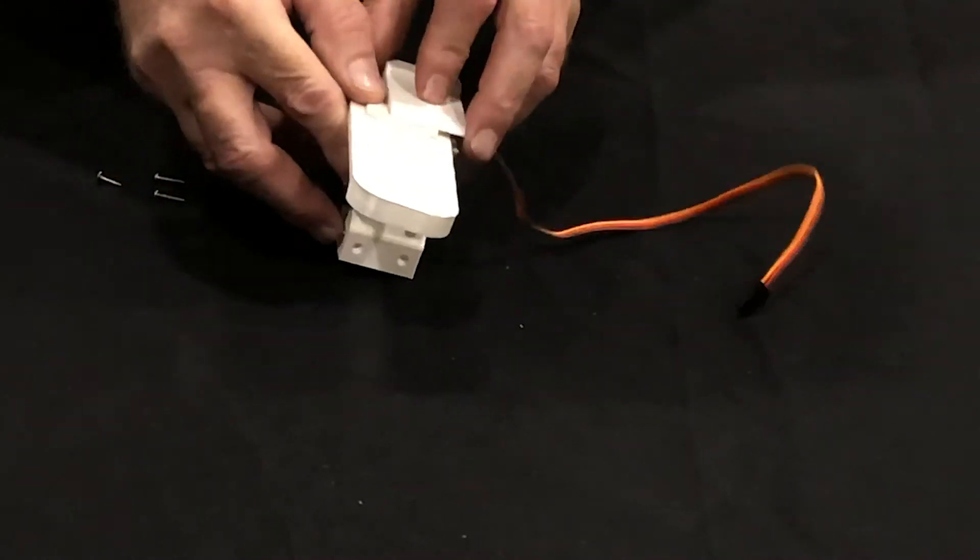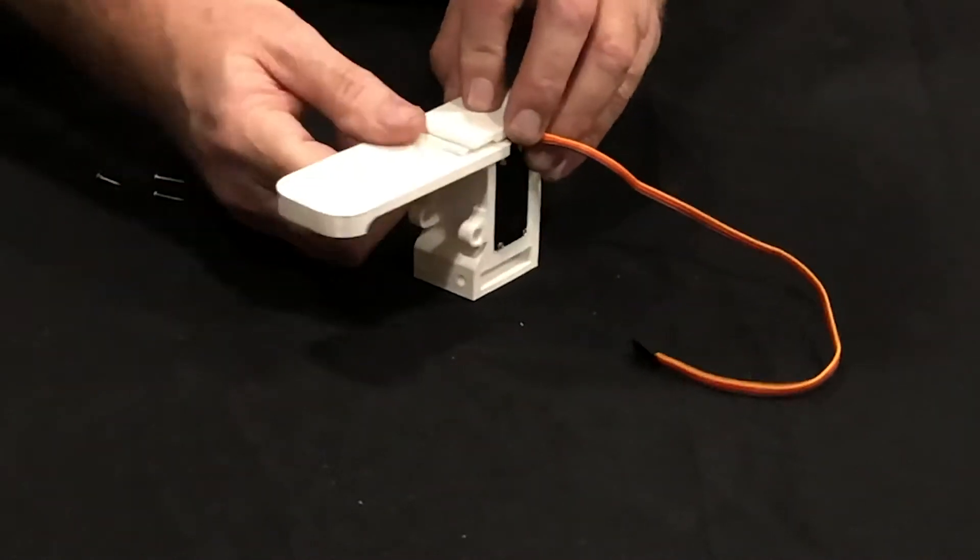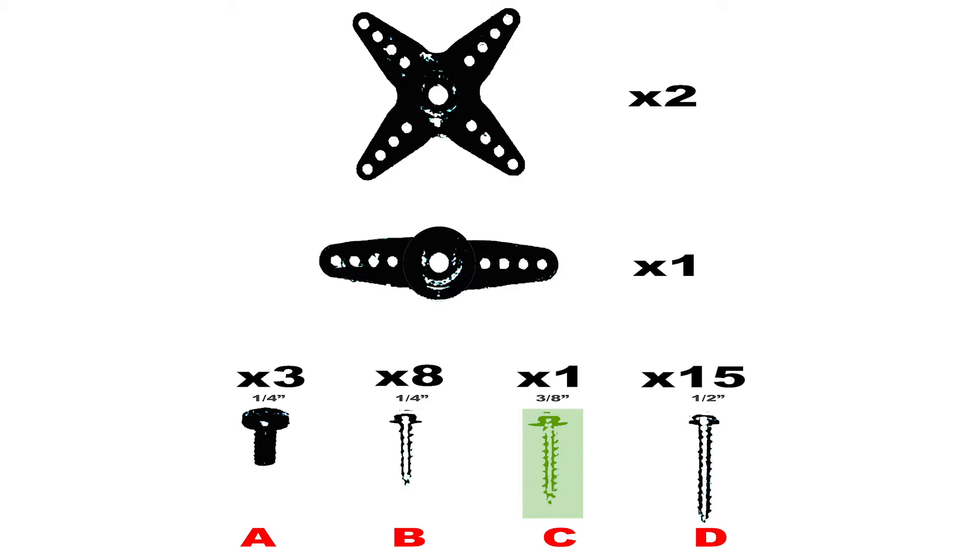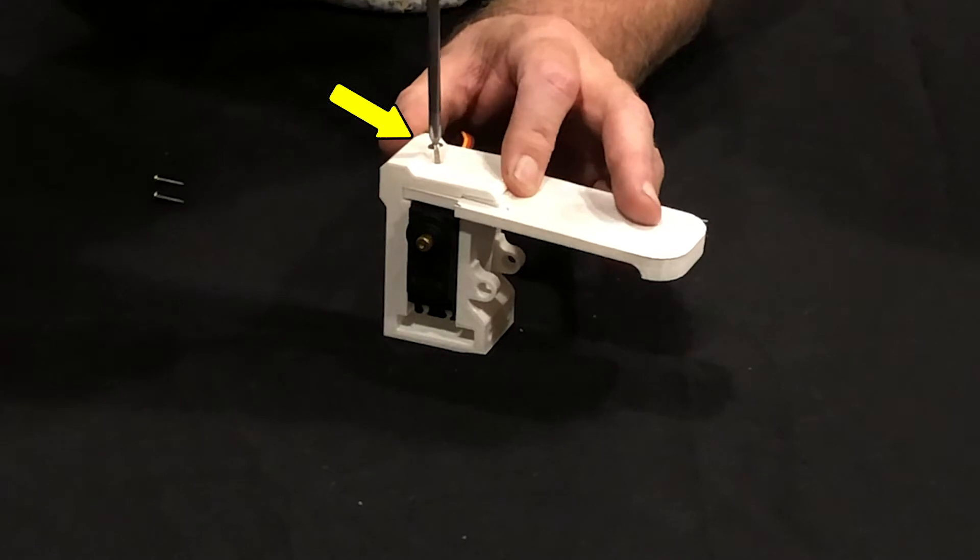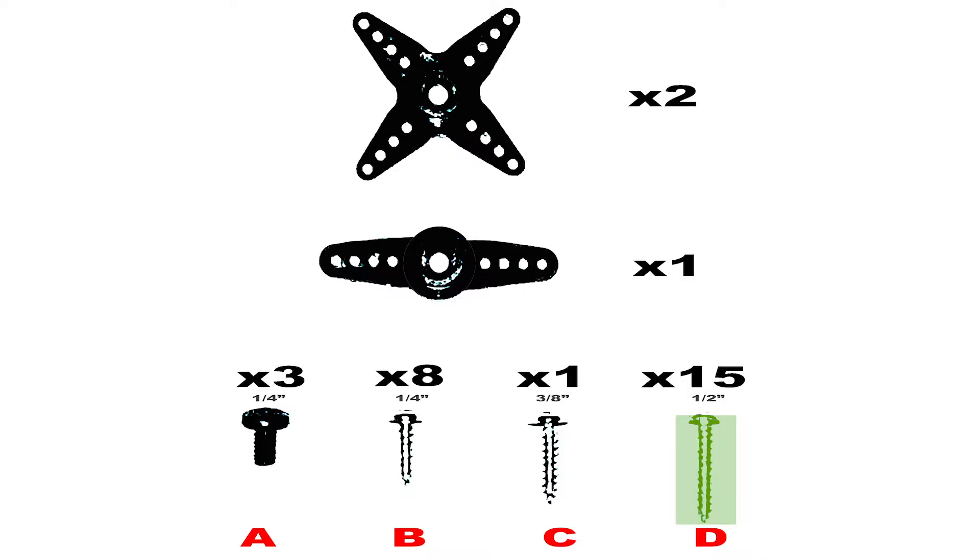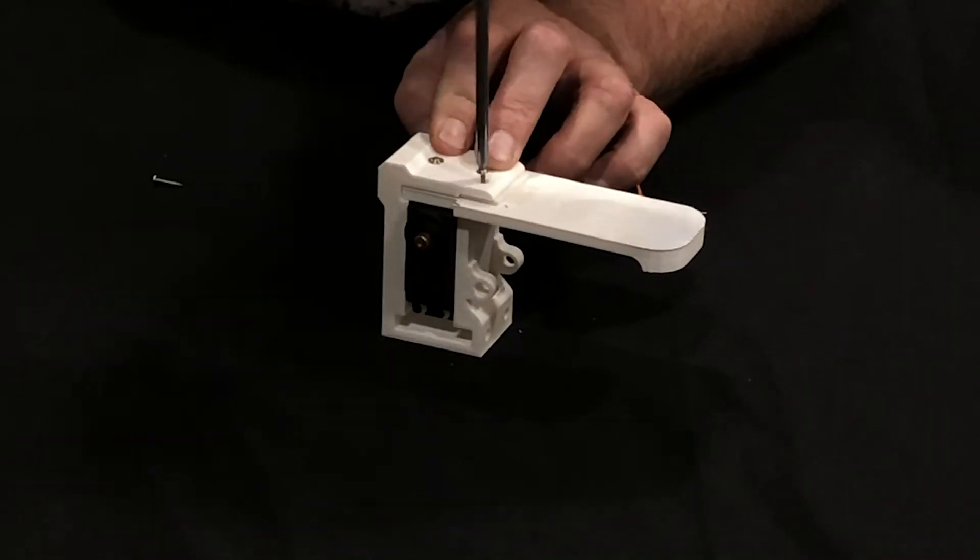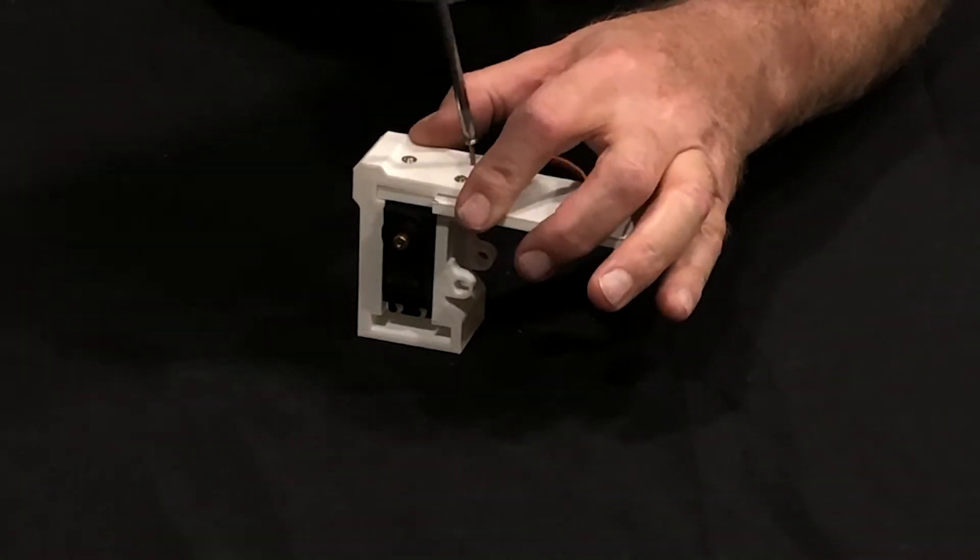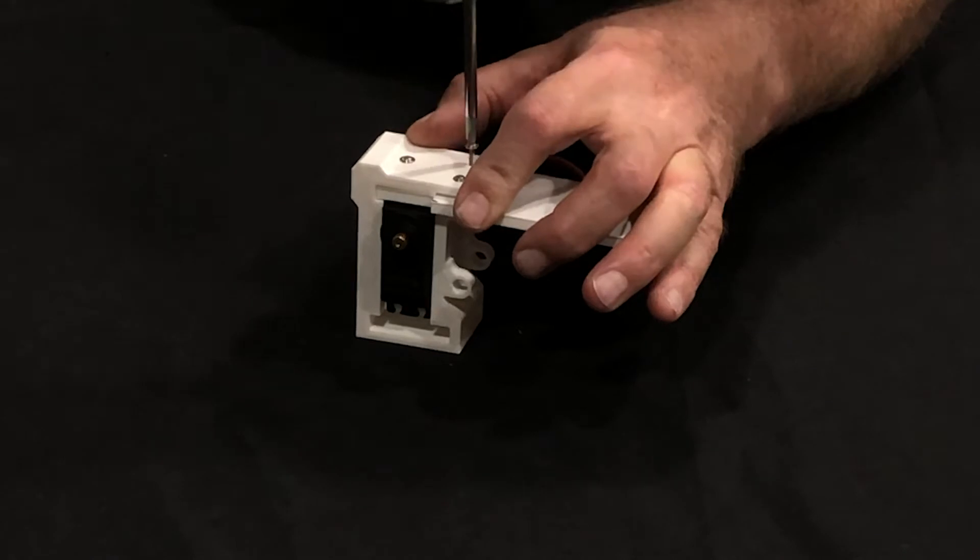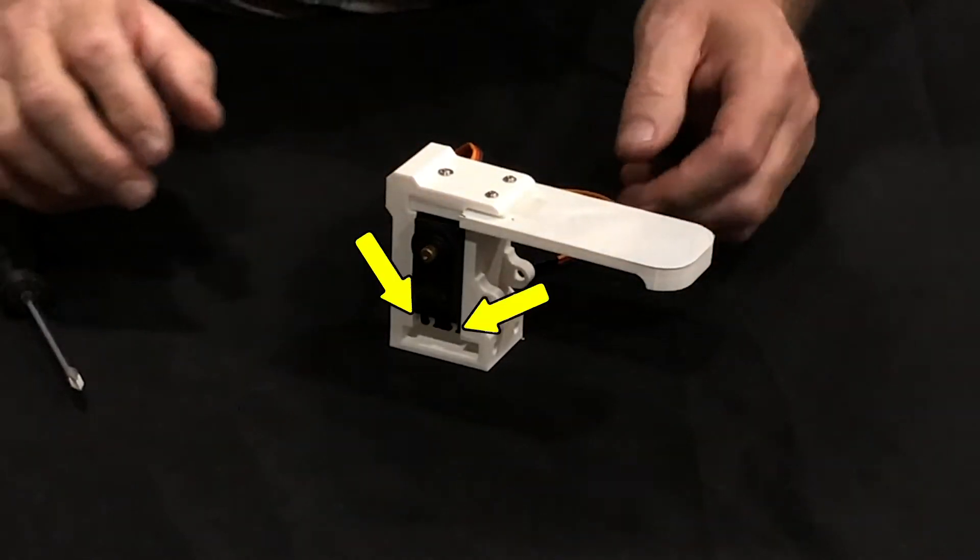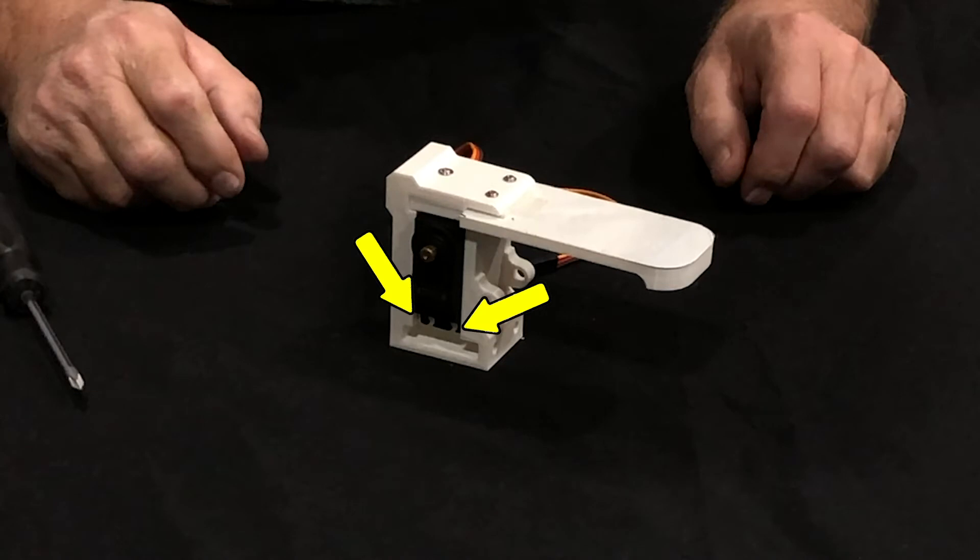Once you've done that, you can begin to screw it all together. We'll take one screw, screw C, and put that in the hole by itself. Then we'll take two of screw D and screw those into the other two holes. Then we'll screw the bottom of the servo into place using two of screw D.